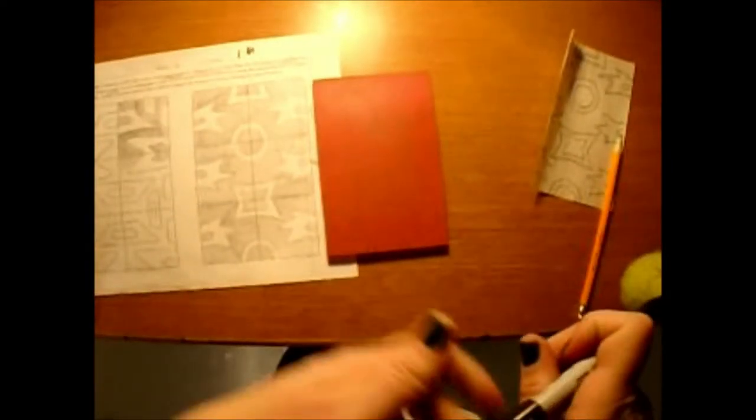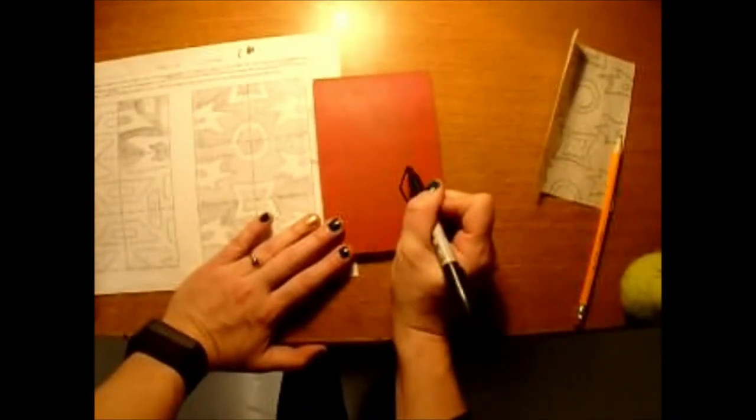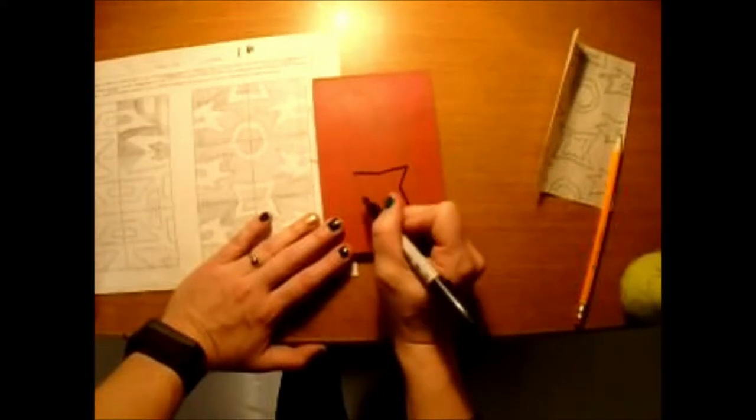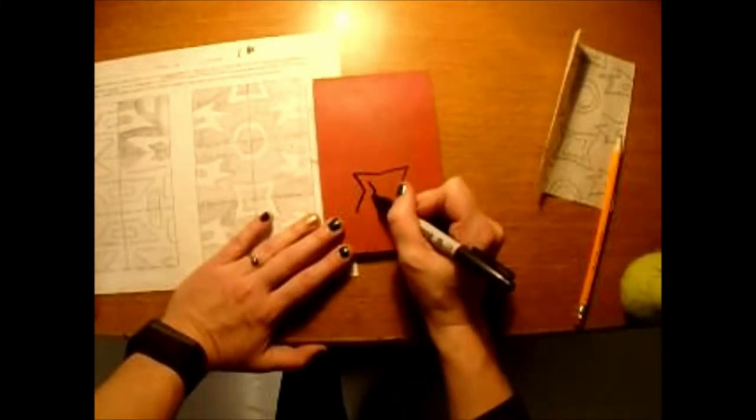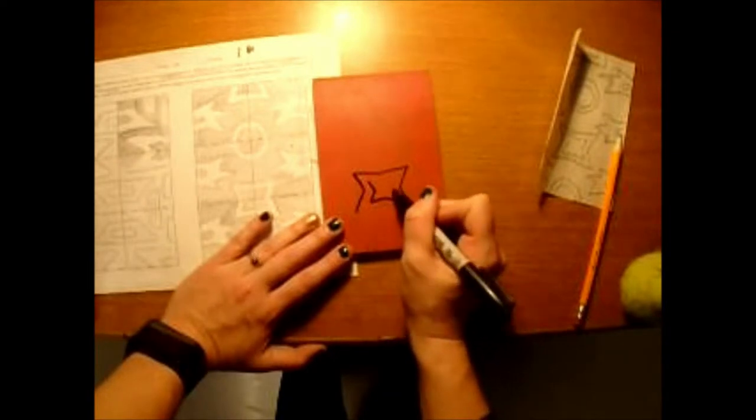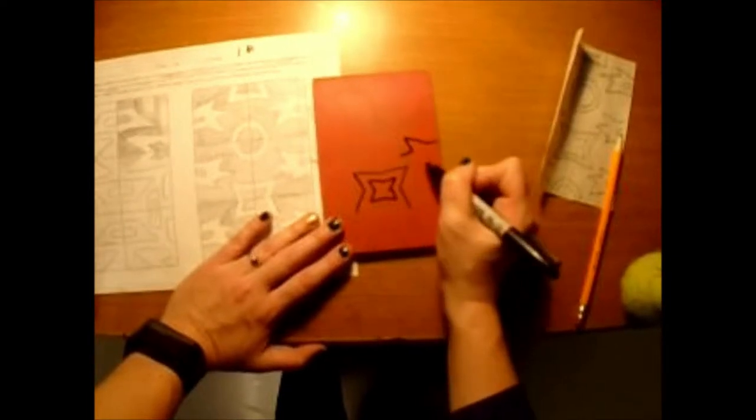Now you're going to use a Sharpie marker, and you are going to outline over the top of your pencil, because the pencil is going to smudge off, so we're going to do this in Sharpie so that the pencil doesn't smudge off before you can get this carved.